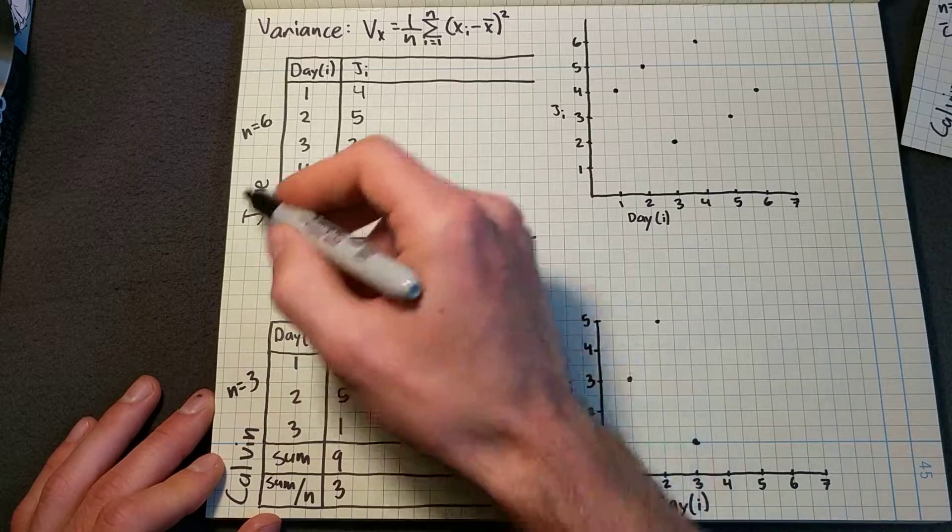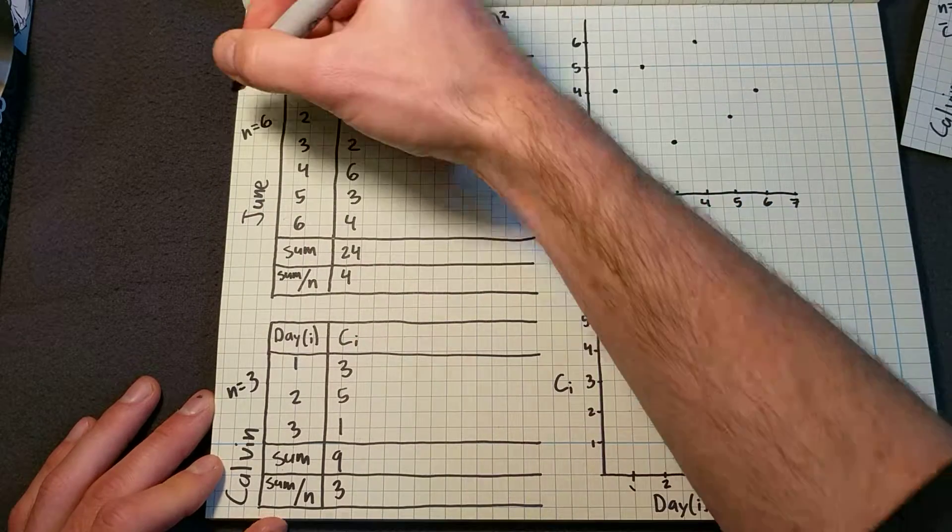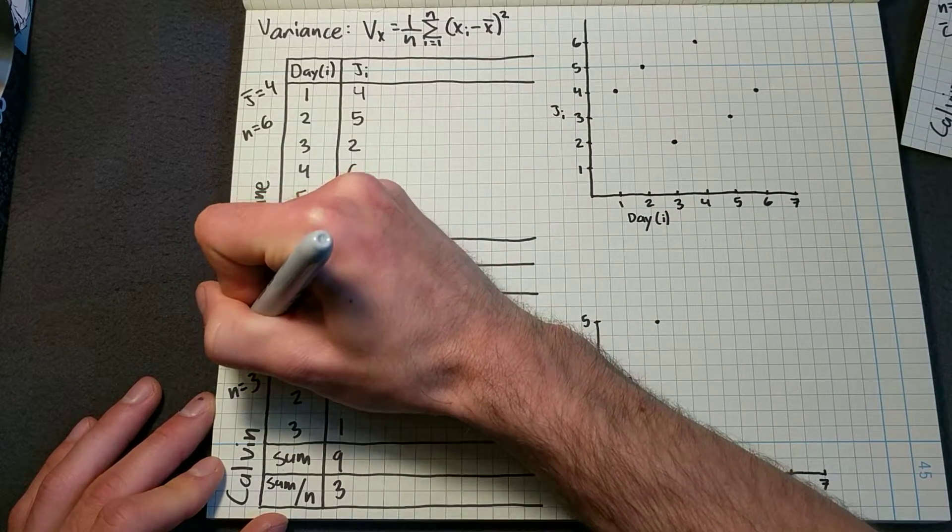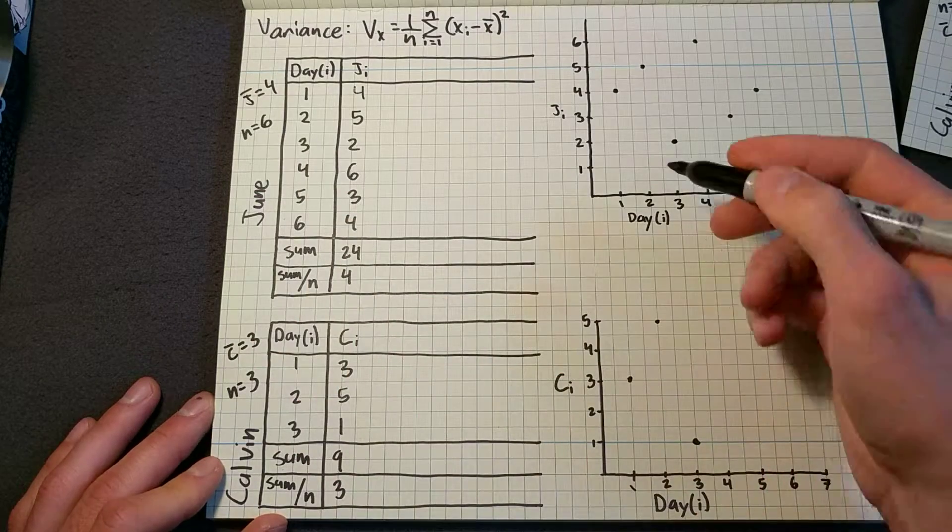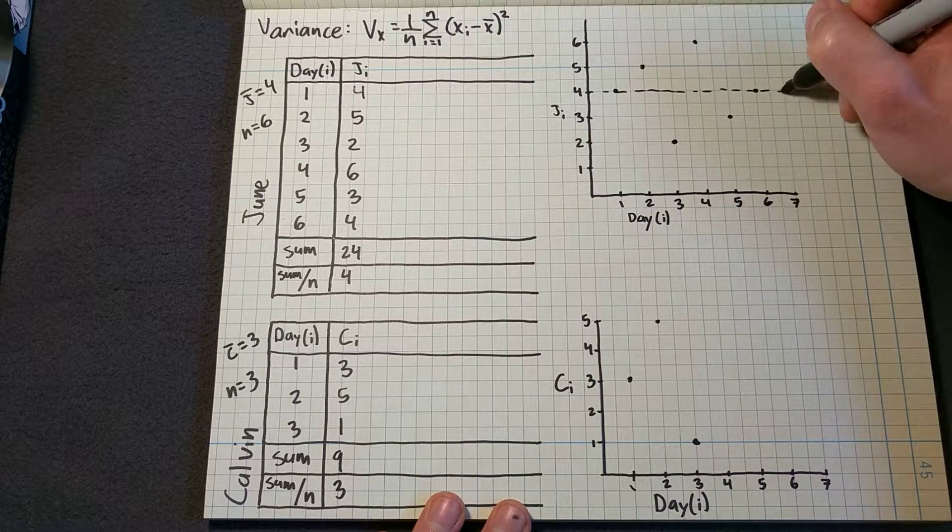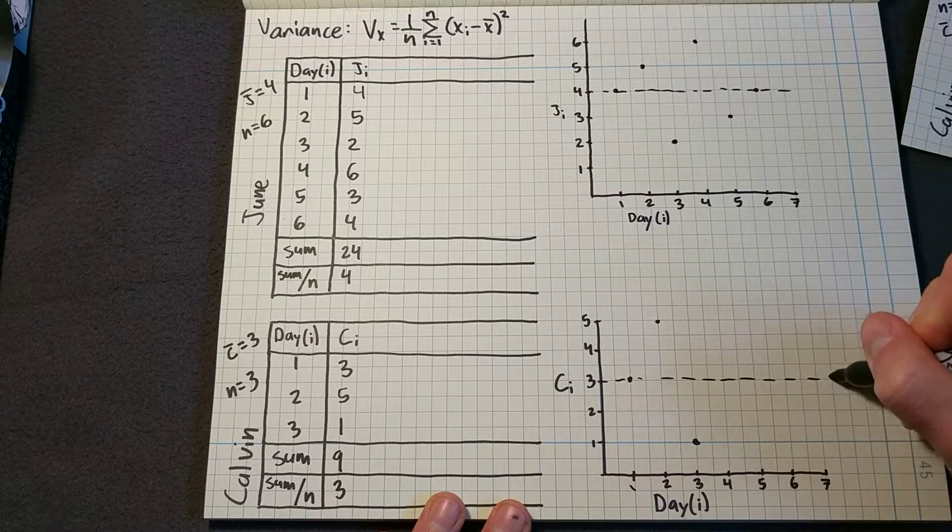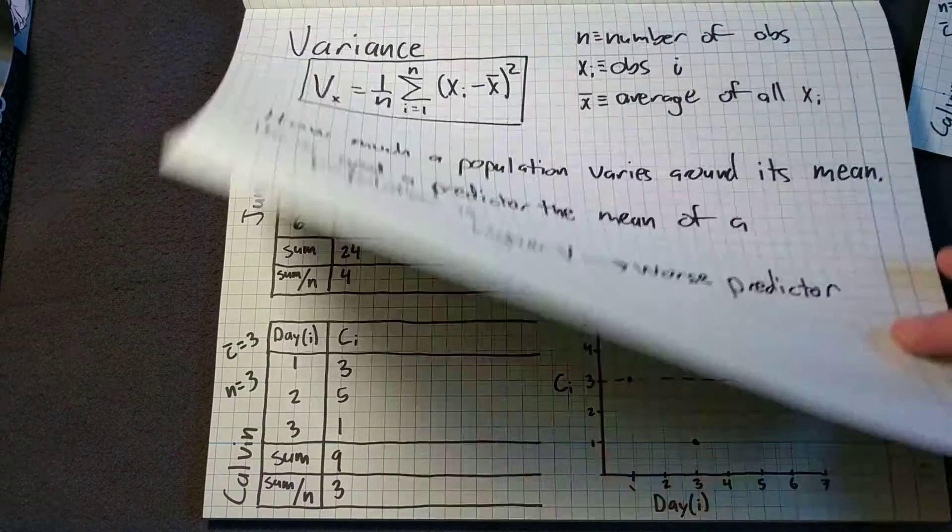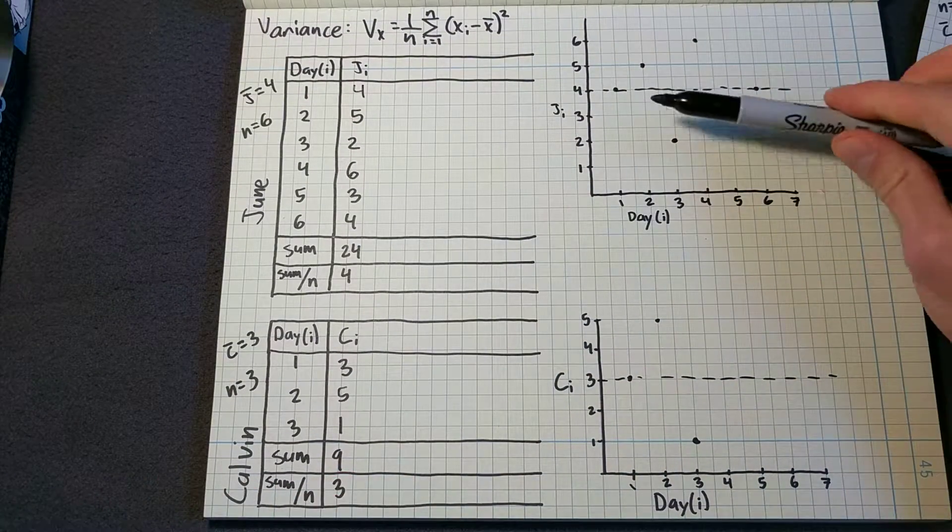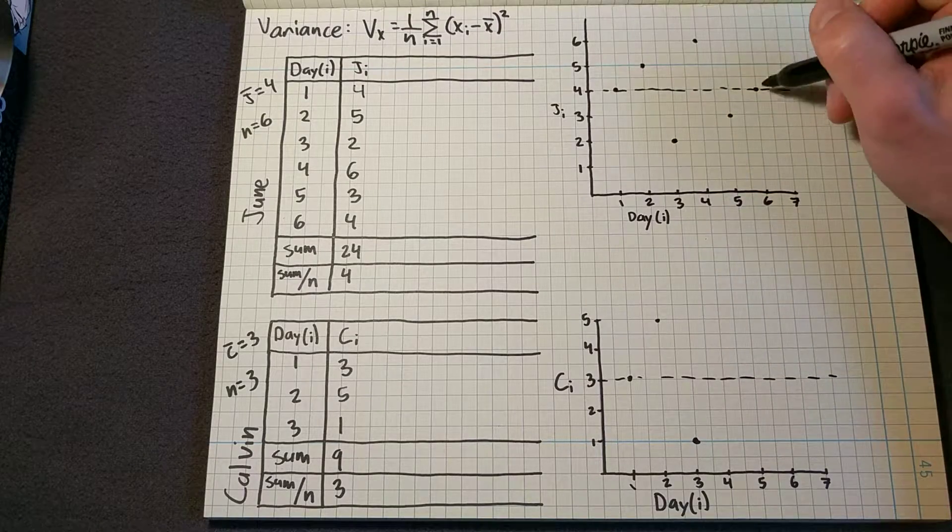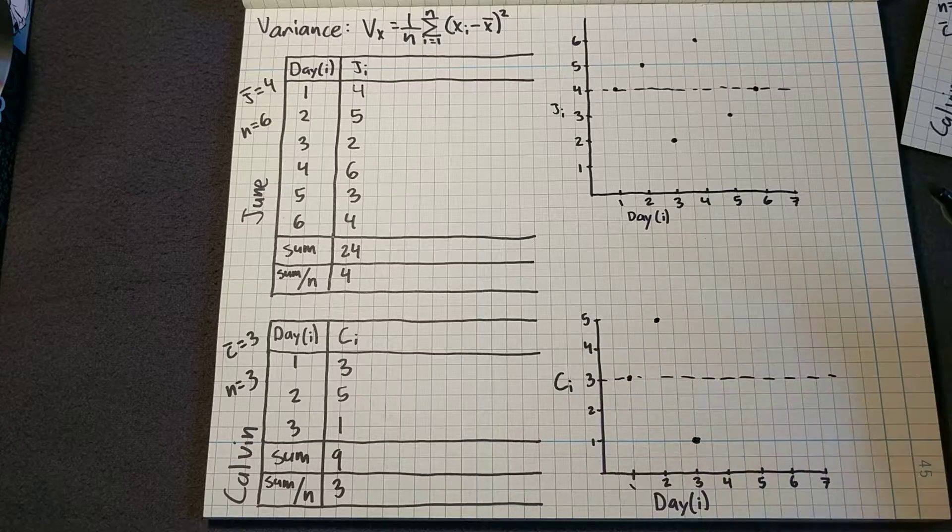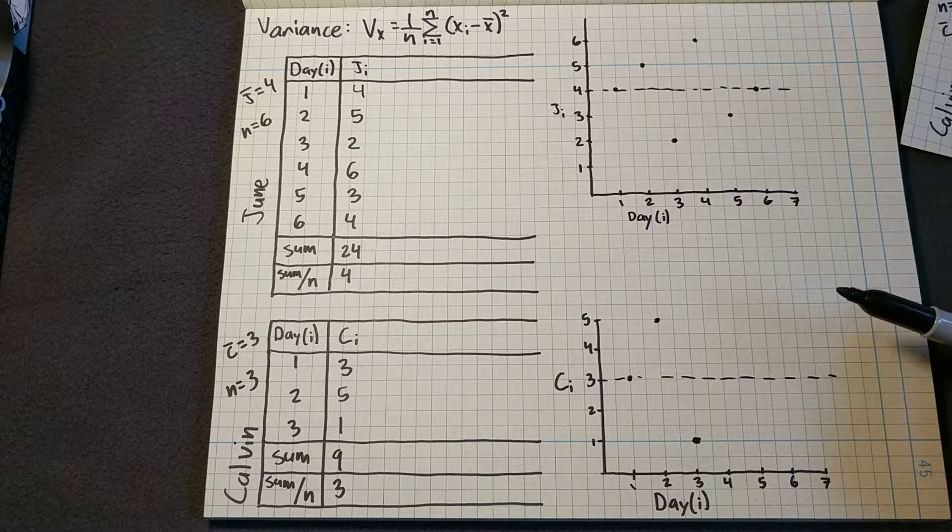9 divided by 3 is equal to 3. And remember, this is this term in our variance. For June, I'm going to call this J bar equals 4. For Calvin, C bar equals 3. Now let's go back to our plots and draw the average across. So sure enough, if we think about variance as how much a population varies around its mean. For June, we jump up, we jump down, up and down, and then back on the line. It's pretty sporadic. And for Calvin, we only have 3 days, but he also eats pretty sporadically, jumps up and jumps down. So I would expect that our variance is going to be pretty similar.